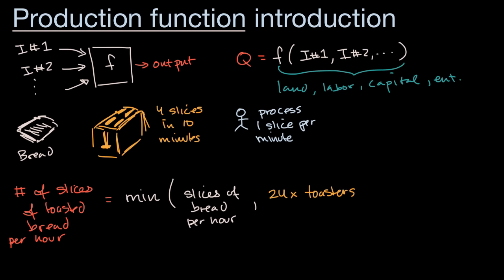And then last but not least, how much bread or how many slices can one person process per hour? Well, it's going to be 60 slices per hour. So we do 60 times the number of workers. And so it's worth, at this point, just pause this video and really process what's going on. What are the inputs here and what are the outputs?